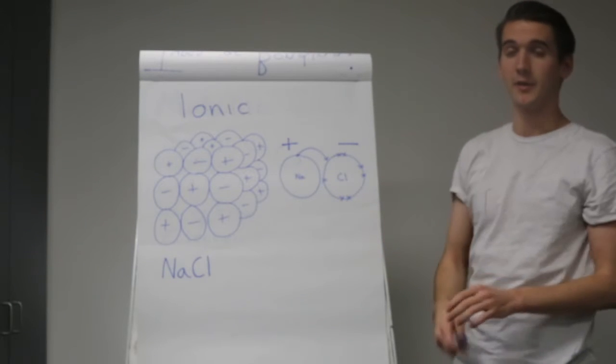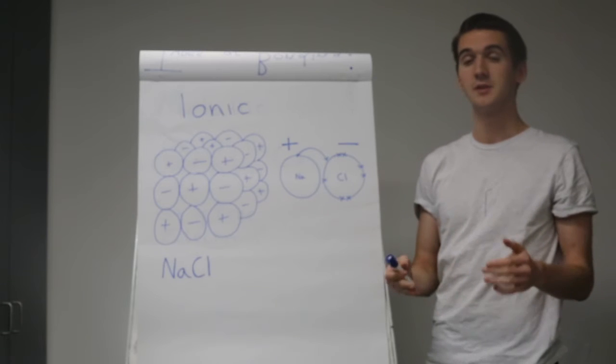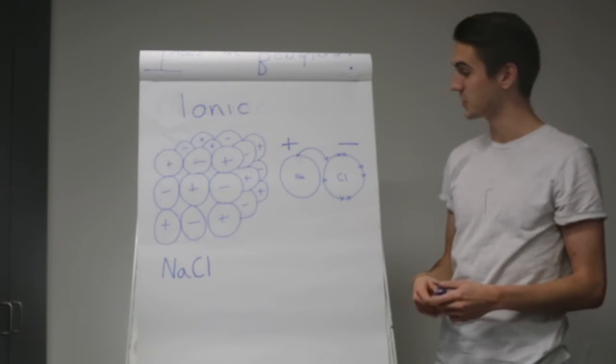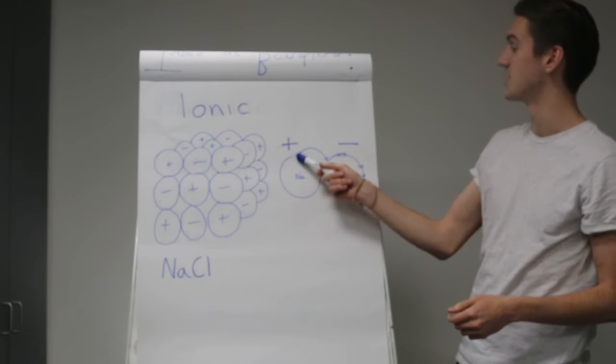Secondly, we have ionic bonding. In our ionic bonds, we've got atoms that give over electrons to other atoms. For example here, we've got sodium, which gives an electron to chlorine.